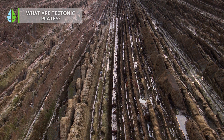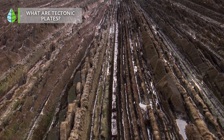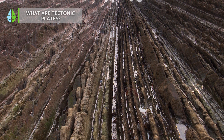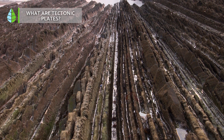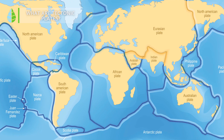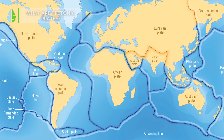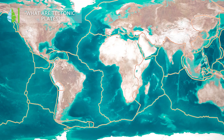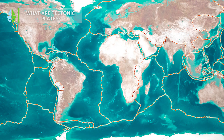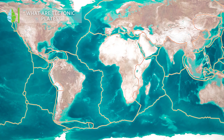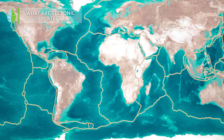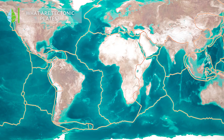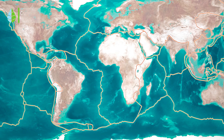The lithosphere is composed of 14 major tectonic plates and 46 secondary tectonic plates. The difference between major and secondary plates lies in their size, with major plates being larger.